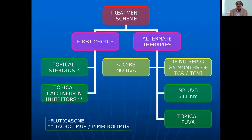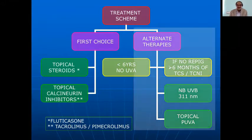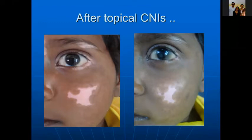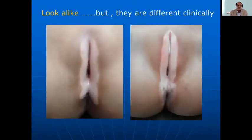Here is an example where the size of vitiligo has reduced by about 60% after topical calcineurin inhibitors, and within three to six months a complete repigmentation is likely to occur.